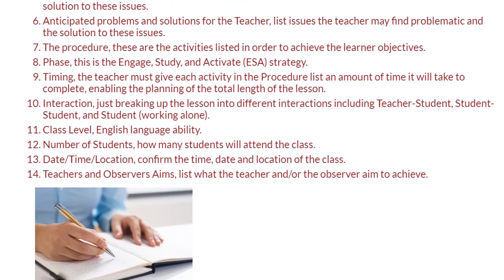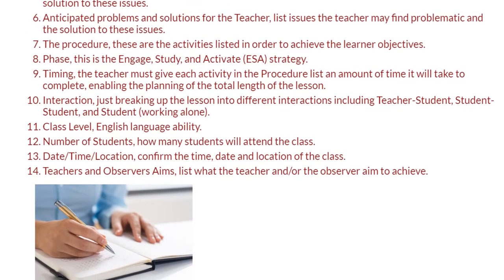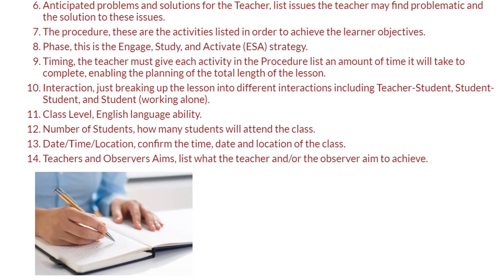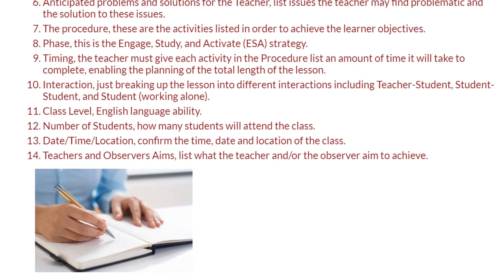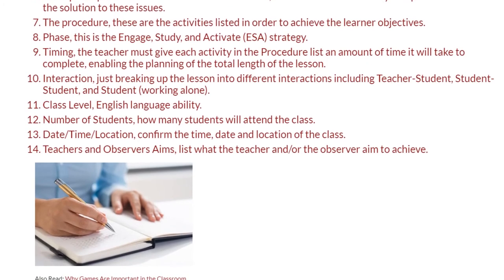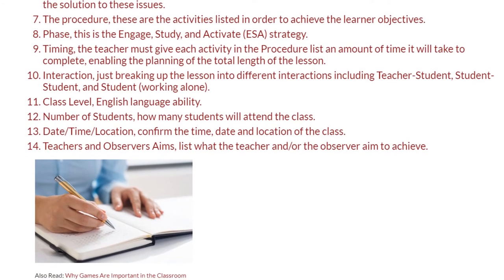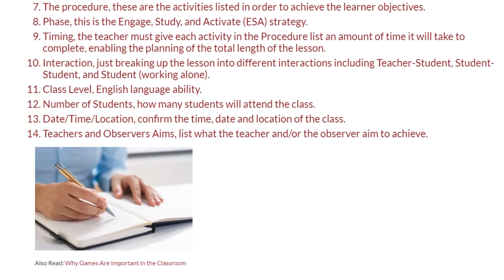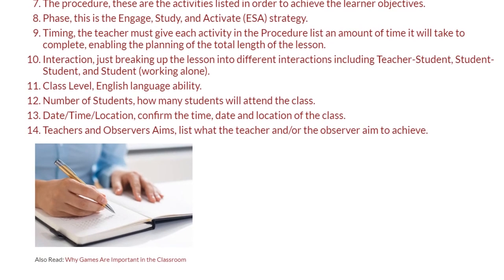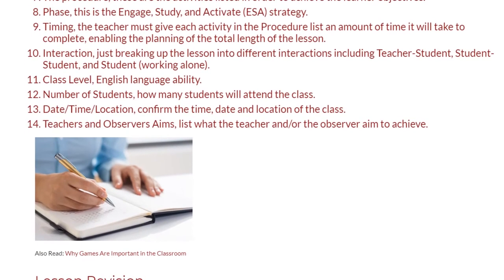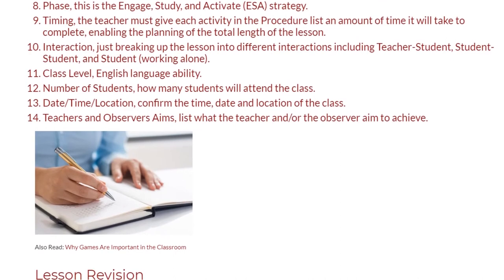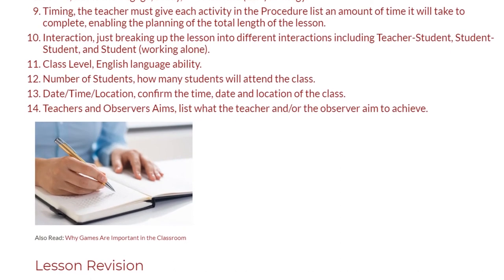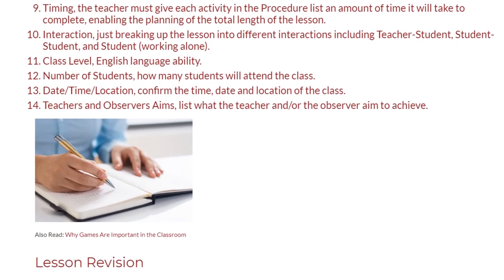11. Class Level. 12. Number of Students — how many students will attend the class? 13. Date, Time, Location — confirm the time, date and location of the class. 14. Teachers' and Observers' Aims — list what the teacher and/or the observer aim to achieve.